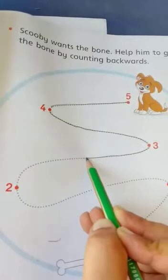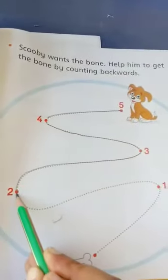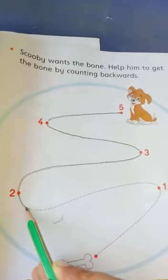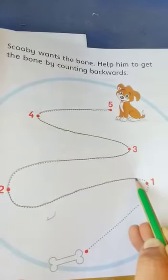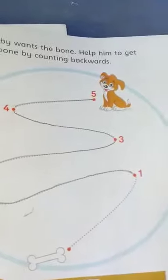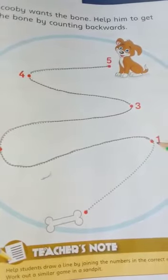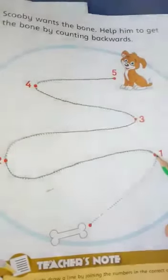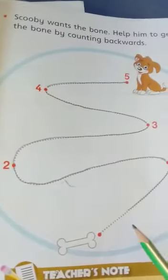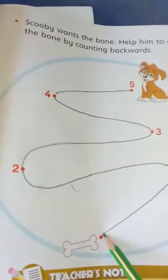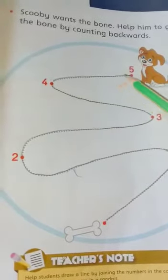Which number will come? Yes, number two. Now we will make this line — very good. Now this is our number one. We started from number five and now we are on number one. Now reach the bone! Yes, we have completed it. Students, today we have learned about backward counting.